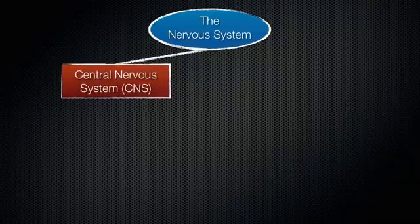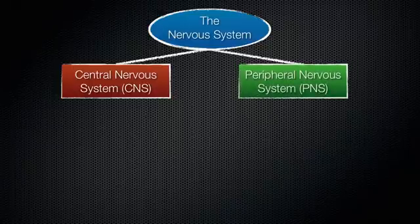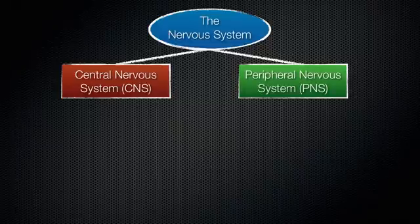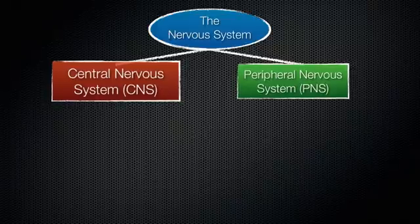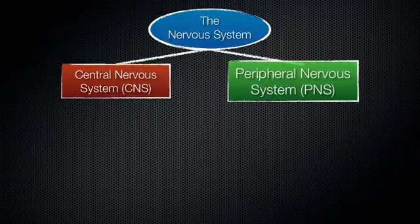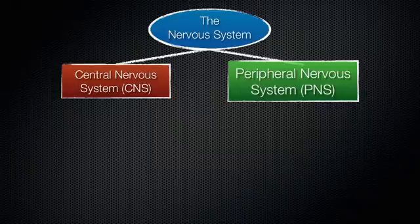First, we have the central nervous system and we have the peripheral nervous system. So these are the two systems that we can divide the nervous system into. The central nervous system is the processing center of the nervous system — a lot of processing happens here. And the peripheral nervous system is what connects the central nervous system to the limbs and the organs.